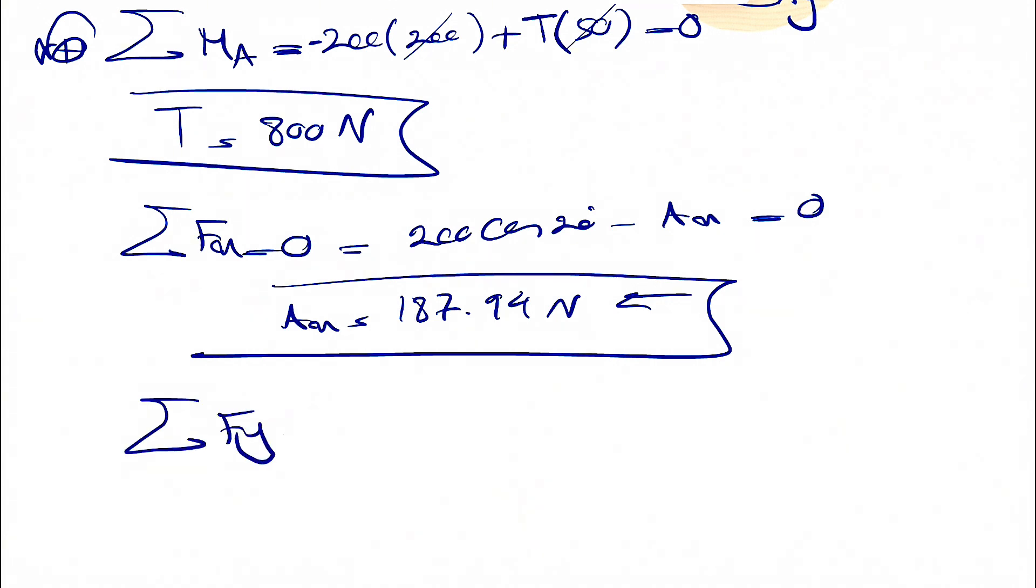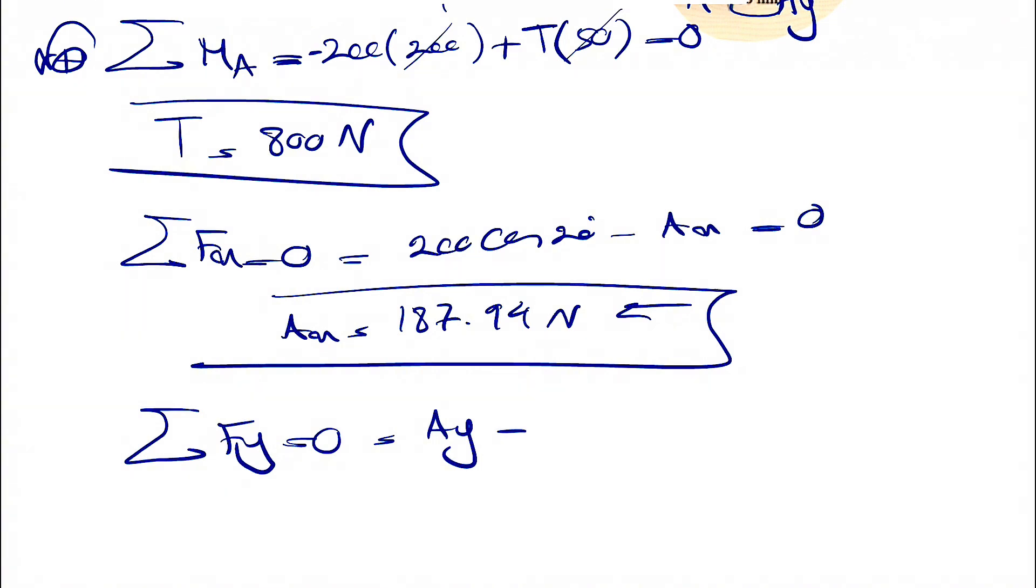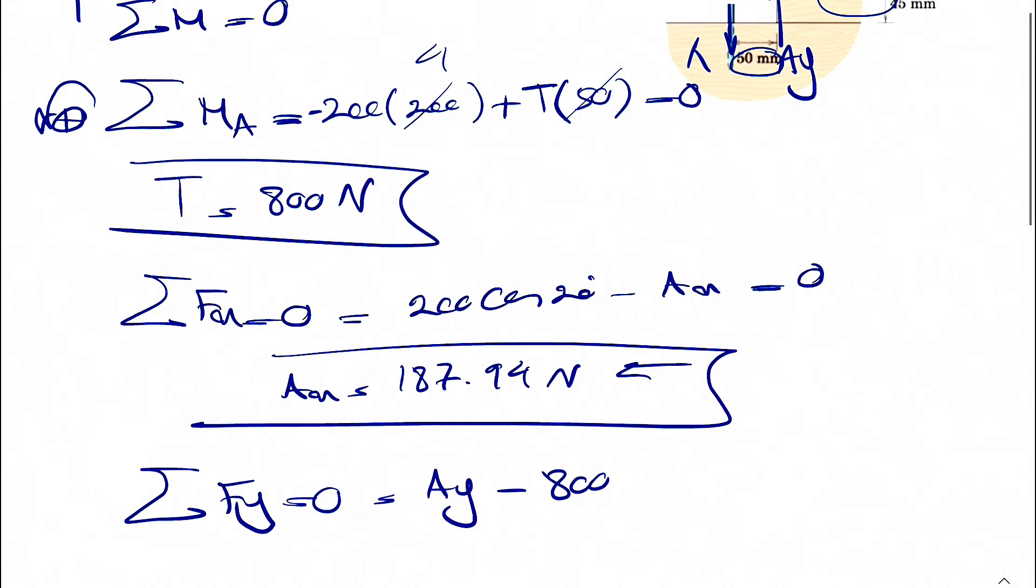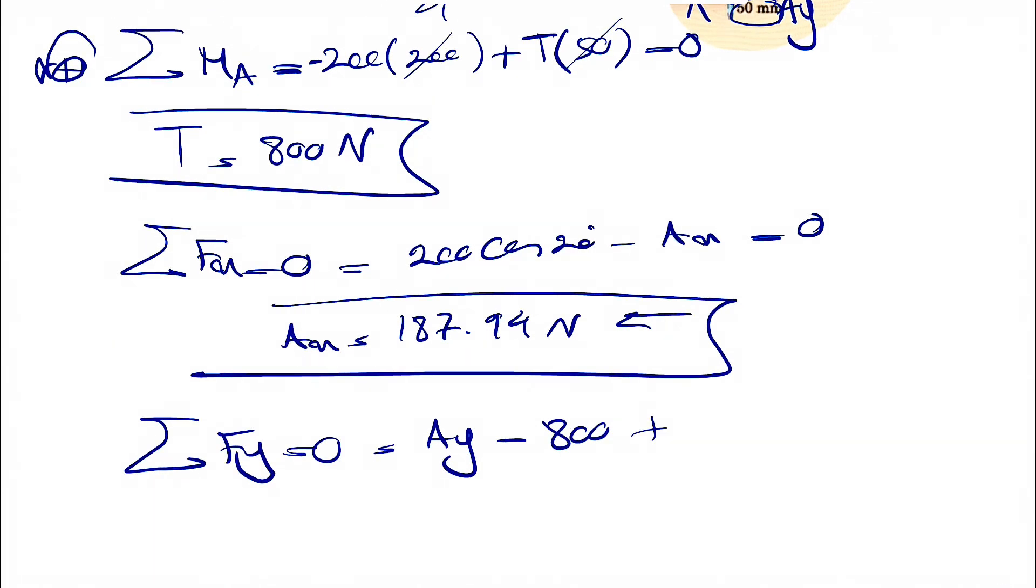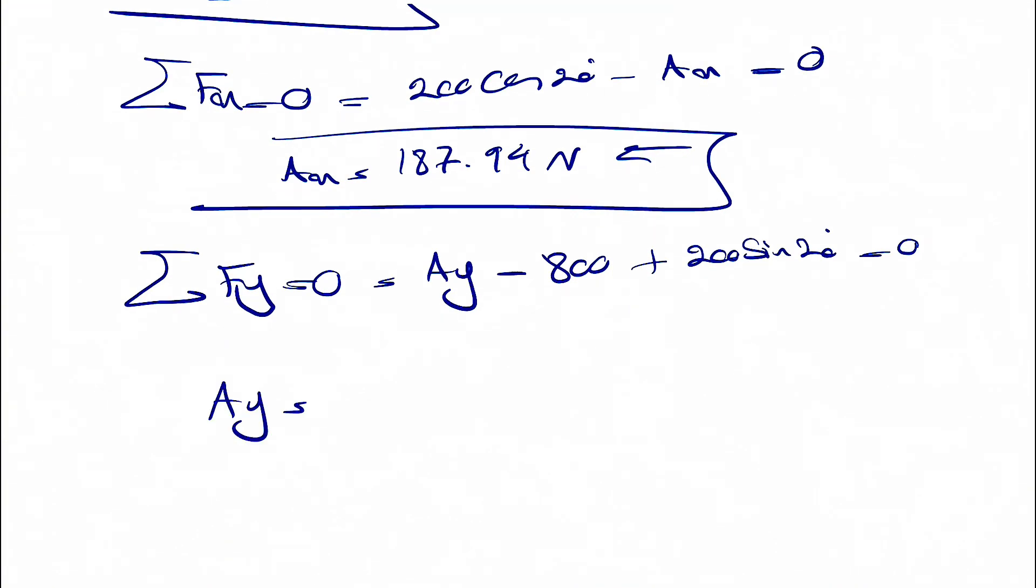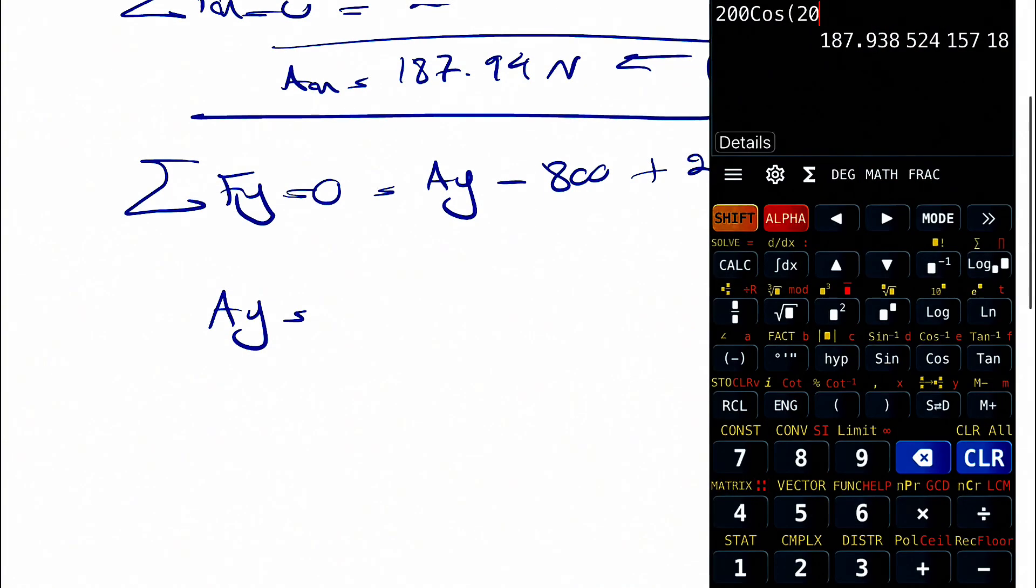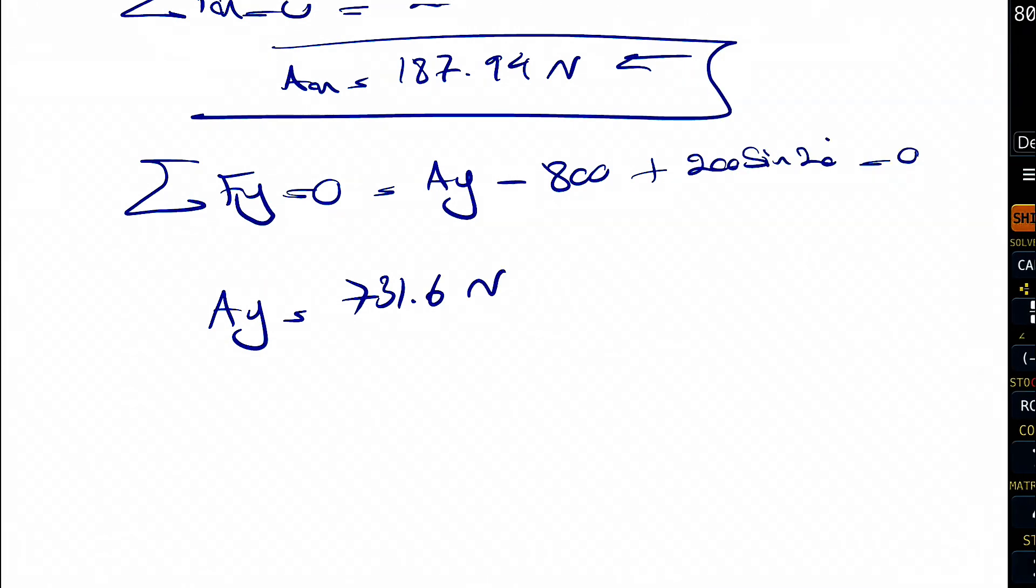And last one, we'll just have sum of all forces in Y equals zero. We're going to have AY. We're going to have T, which is downward minus 800. And the Y component of 200 is also positive, so plus 200 sine of 20 degrees equals zero. So AY is basically 800 minus 200 sine of 20, which is going to be 731.56 newtons.